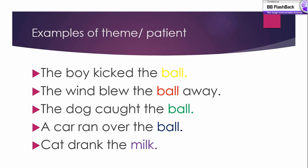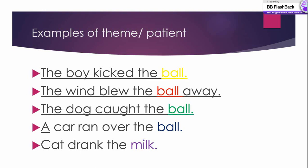Examples of theme and patient — the receiver of the action, who undergoes the action. 'The boy kicked the ball' — ball is the patient. 'The wind blew the ball away' — so a non-human entity can also be the agent, and the ball is the theme or patient here. 'The dog caught the ball' — ball is receiving an action. 'A car ran over the ball' or 'the cat drank the milk' — ball and milk are receiving actions performed by different agents: the boy, the wind, the dog, the car, and the cat. In traditional grammar you call them objects, but in advanced grammar and semantic roles you call them patient or theme.